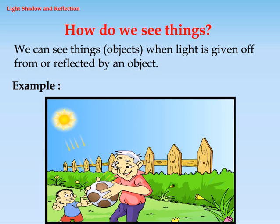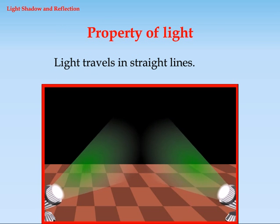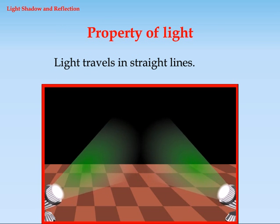Example: a football is seen by the light reflected from the sun that falls into our eyes. Property of light: light travels in straight lines.